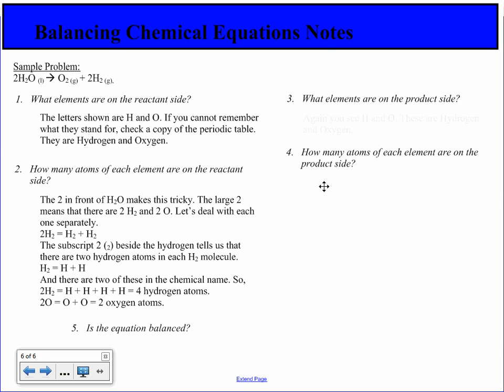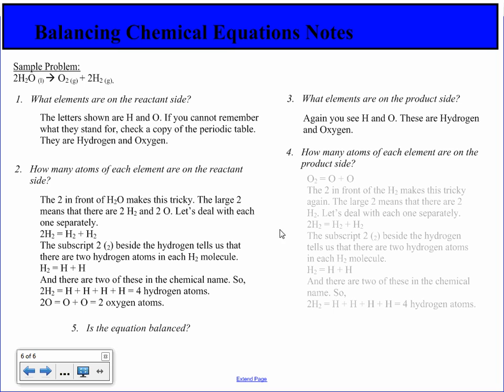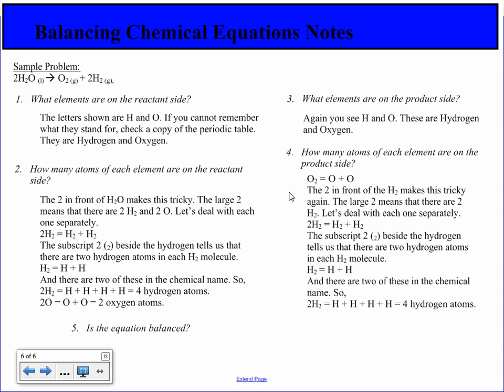What elements are on the product side? Again, we have hydrogen and oxygen. How many atoms of each element are on the product side? O2 has two Os. Then we have a 2 in front of the H2, which makes it tricky again. It's the same process as before. If I have 2 in front of H2, these are actually multiplying. So 2 times 2 is 4.